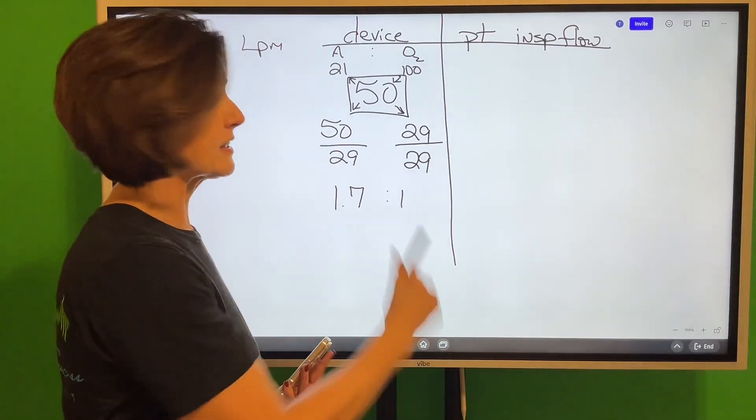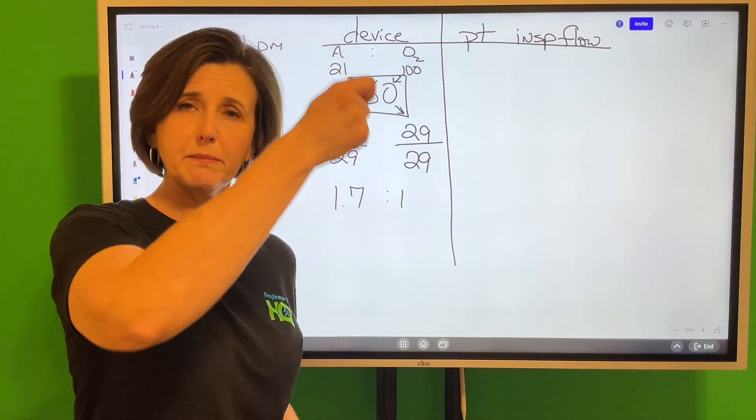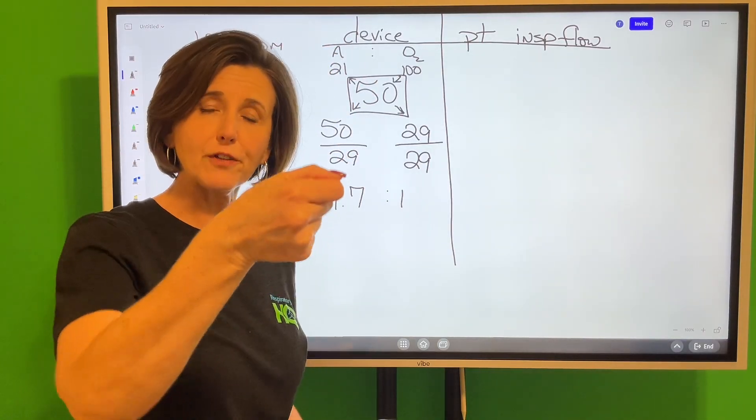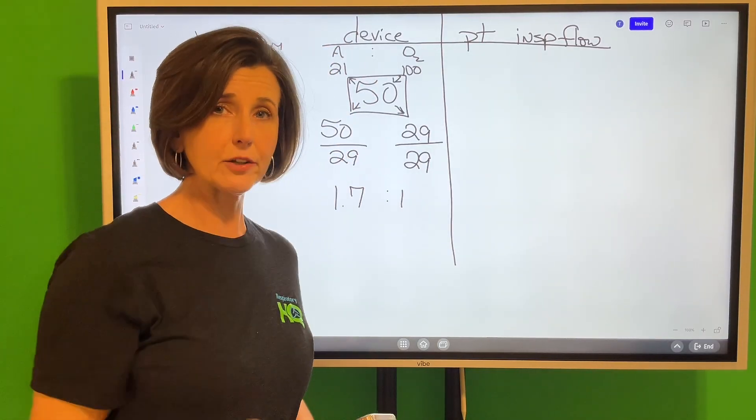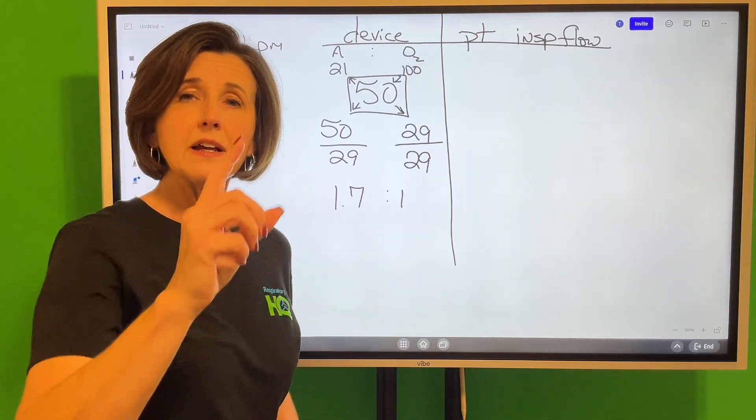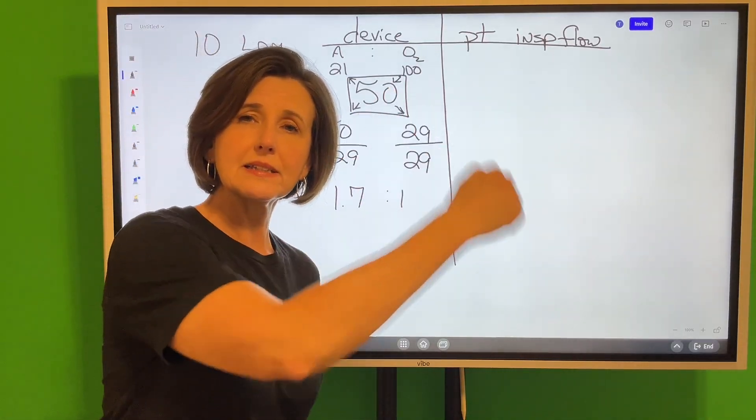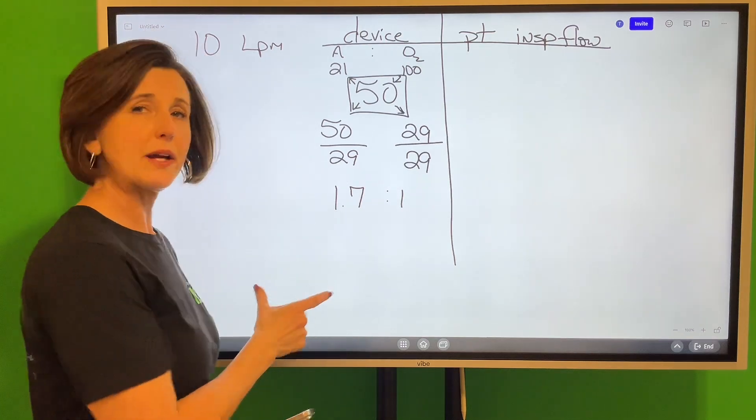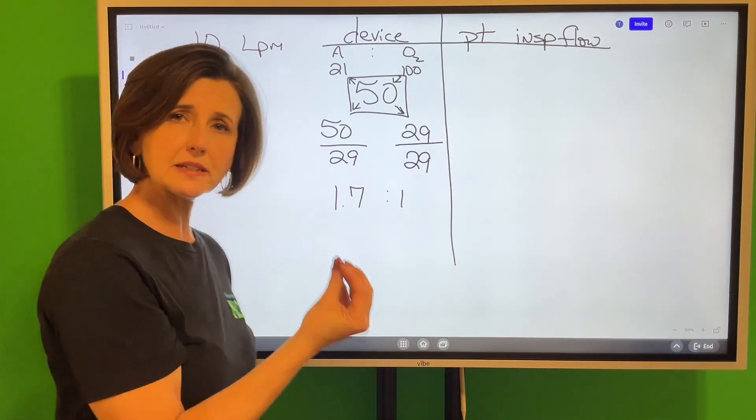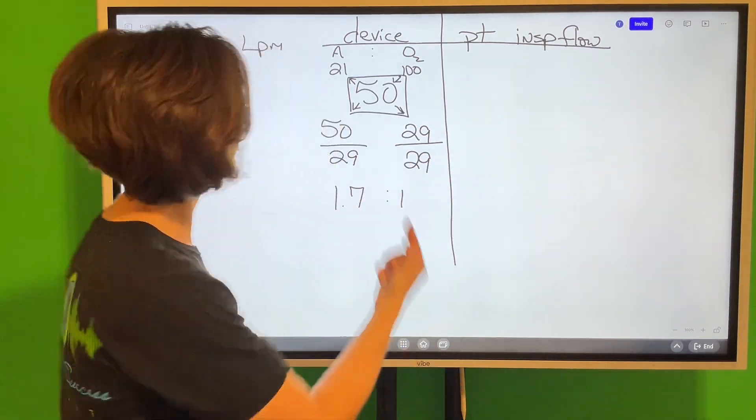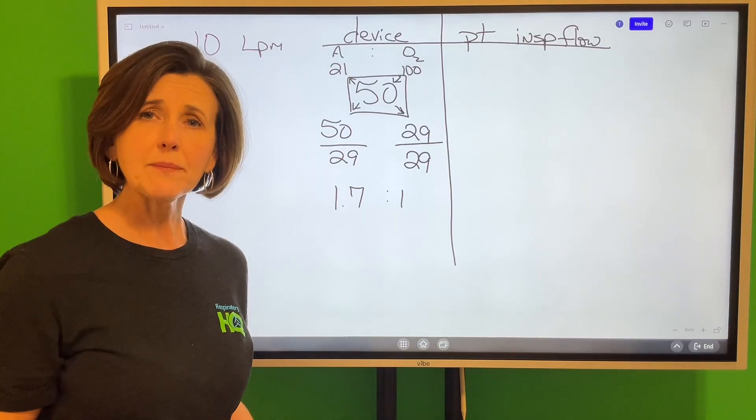Here's what this means: if you set this 50% Venturi mask up on the flow meter and you turn that flow meter on at 1 liter a minute, the system will draw in 1.7 liters per minute of room air. And when you precisely mix these two things, it is a recipe for 50%.